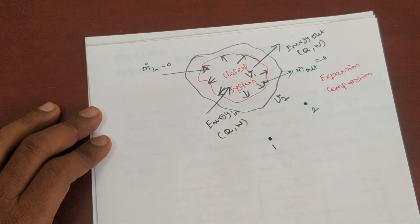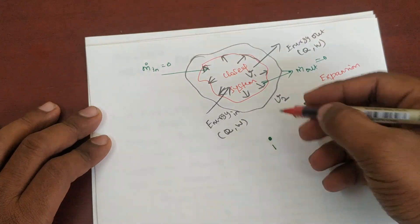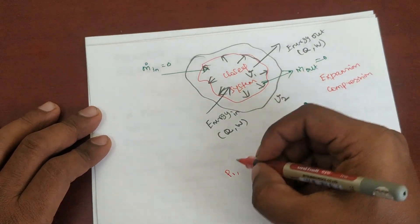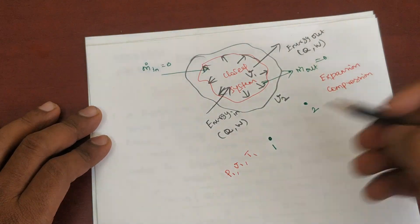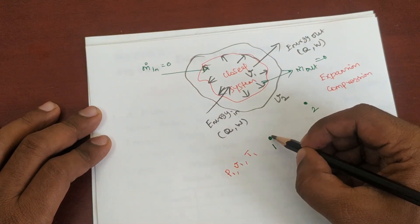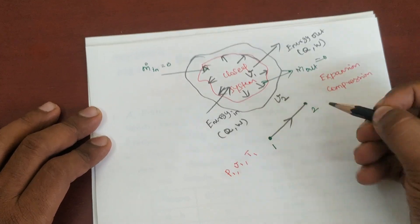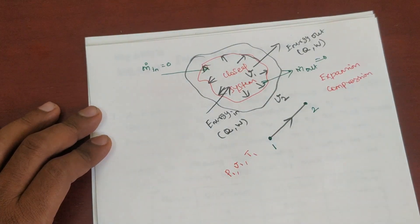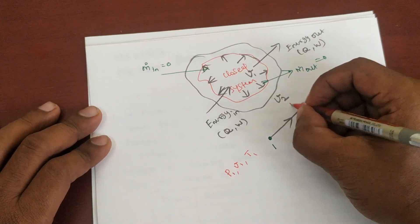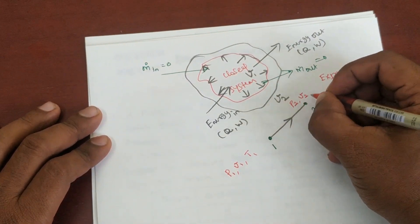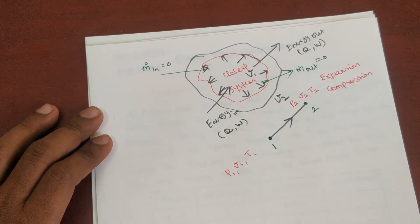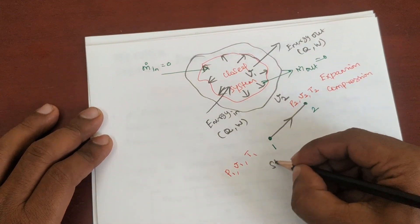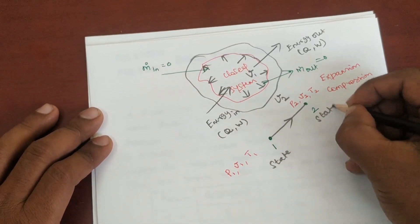Let's take an example. Initially we have pressure P1, specific volume V1, and temperature T1. From point number one we are going to travel to point number two, where the properties are P2, specific volume V2, and temperature T2. This point is called state one, and this is called state two.